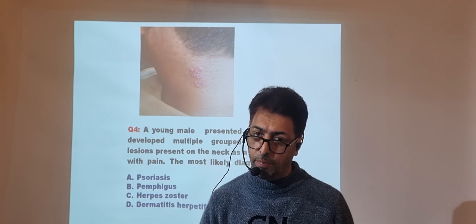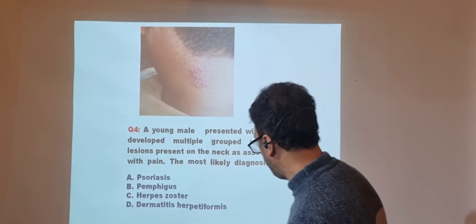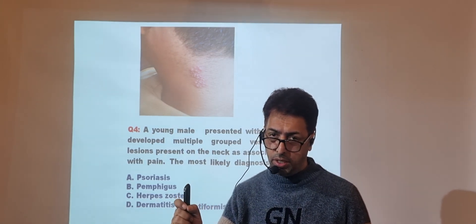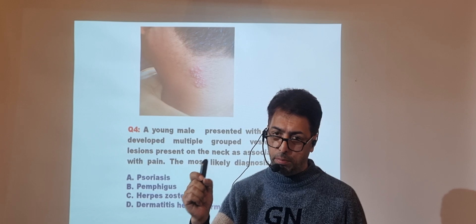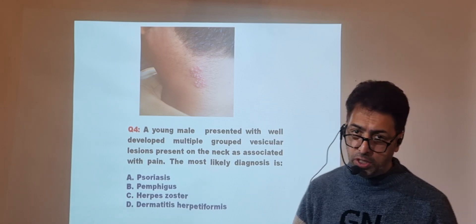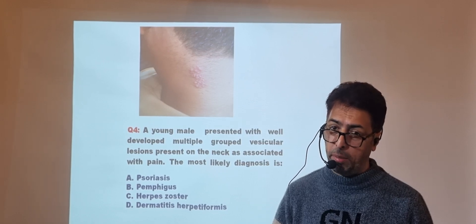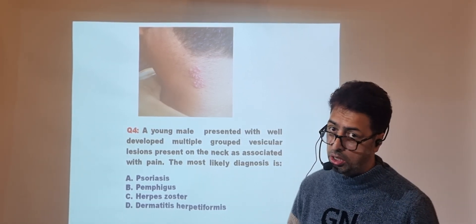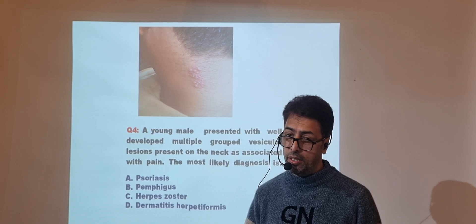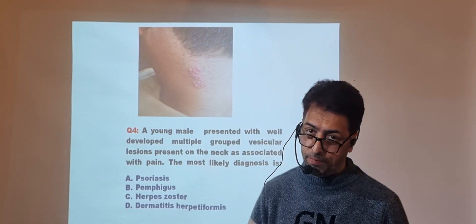Sometimes there can be severe post-herpetic neuralgia, not responding to conventional anti-inflammatory drugs and painkillers, and treated by different types of drugs. The rash can appear in the thoracic, abdominal, or other dermatomal regions. It does not present as plaques seen in psoriasis, nor as mucosal blisters typical of pemphigus, nor as the severe pruritic lesions of dermatitis herpetiformis. The examiner is asking about the lesion shown, and it is simply herpes zoster.